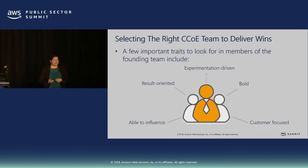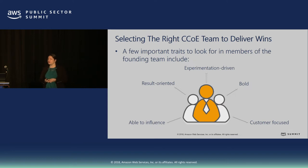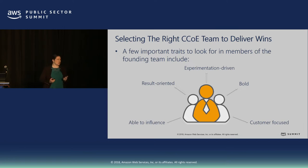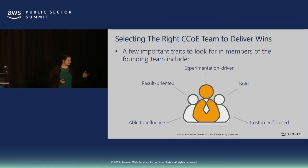Who are we going to put on this team? Personalities matter — sometimes even more than the technical aspect. When I think about traits for the center of excellence, I want somebody who likes to experiment. Many of us were ingrained with the fear of failure. We need to change that culture when we move to the cloud, because now we can iterate, monitor, measure, and try new things fast and cost-effectively. We can spin something up in a couple of days and spin it back down.